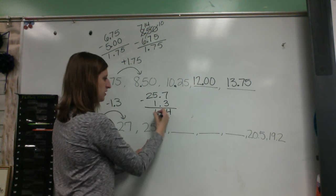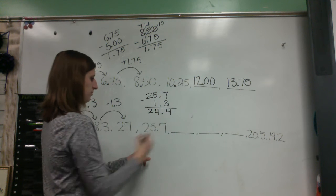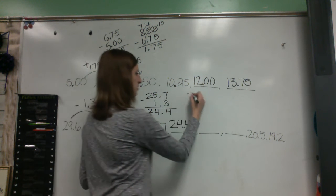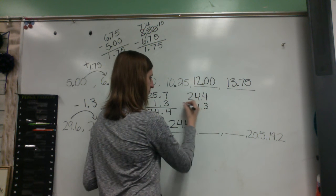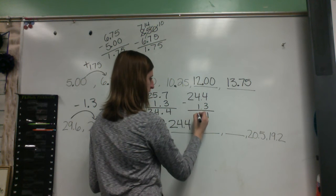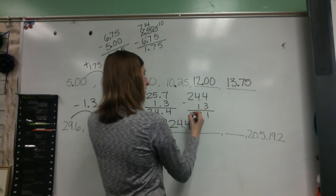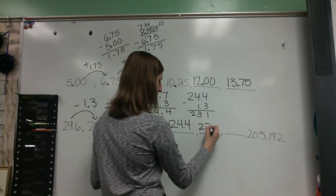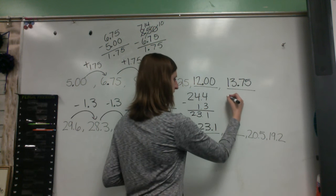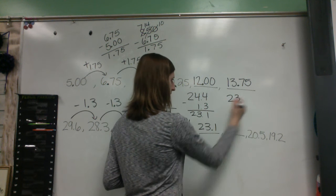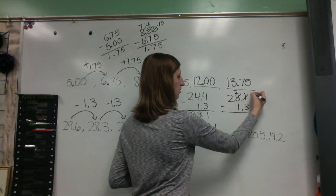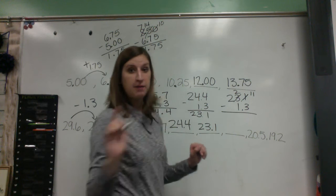So I'm going to subtract 1.3 from 27. 7 minus 3 is 4. 5 minus 1 is 4. And 2 minus nothing is 2. I want to fill that in, 25.7. Now I'm going to subtract 1.3 from that. 4 minus 3 is 1. 4 minus 1 is 3. And 2, so 24.4. Then I'm going to subtract again. Got to borrow. Make that an 11.